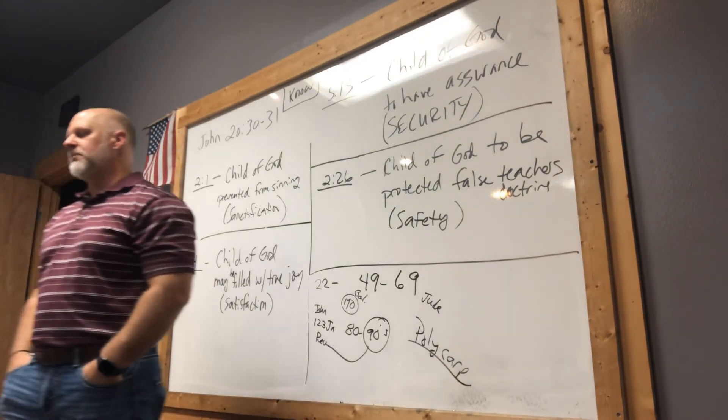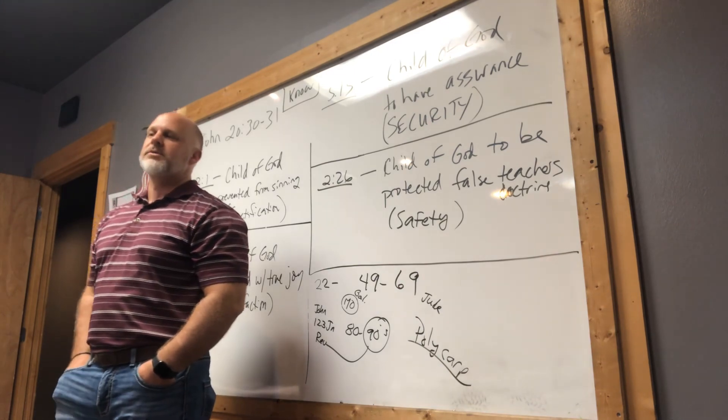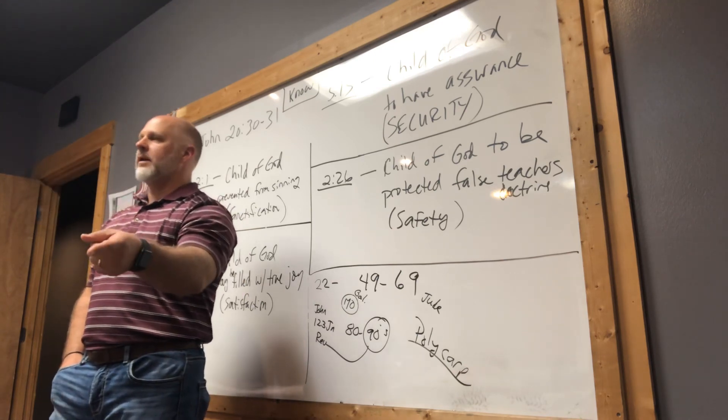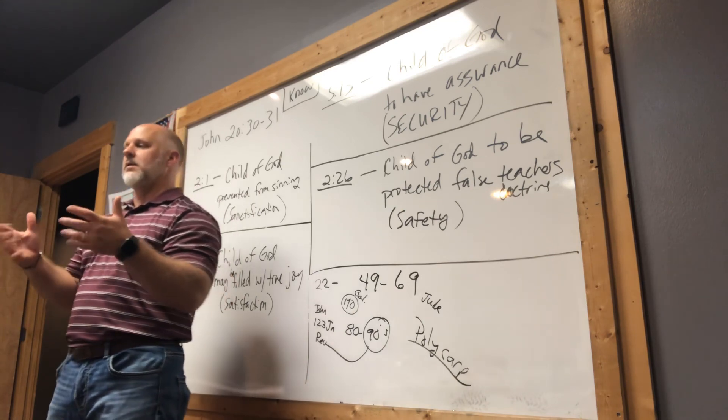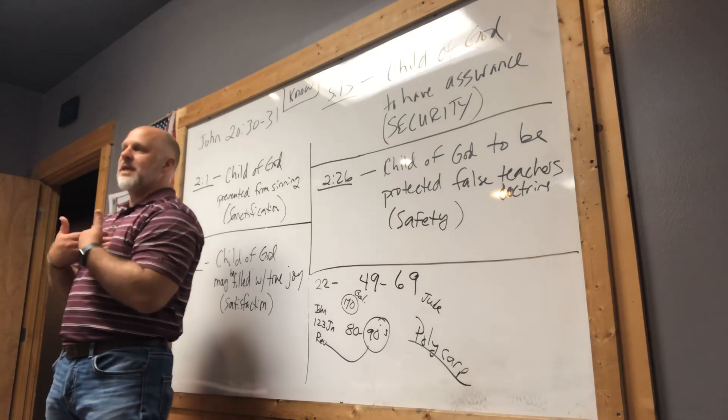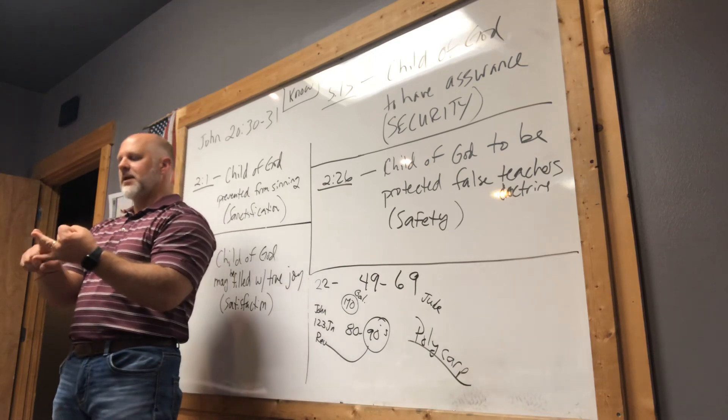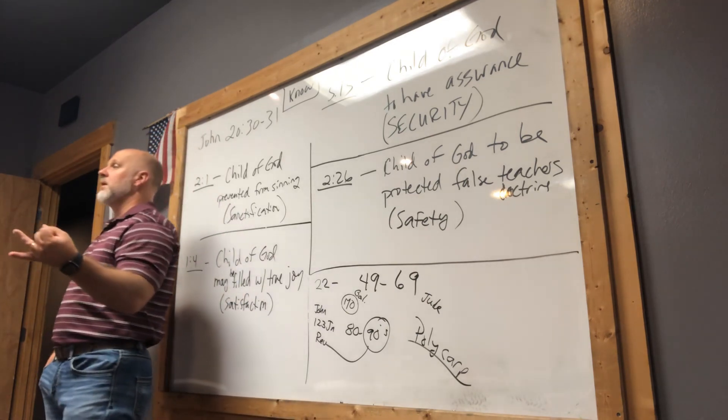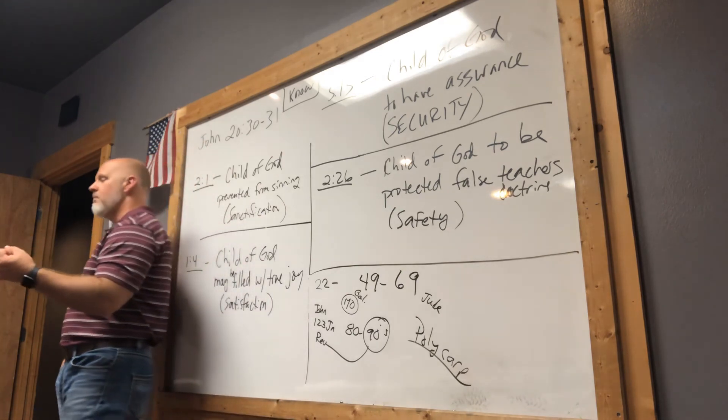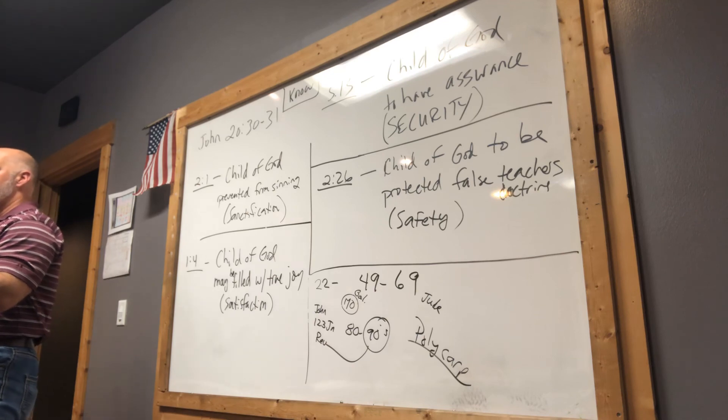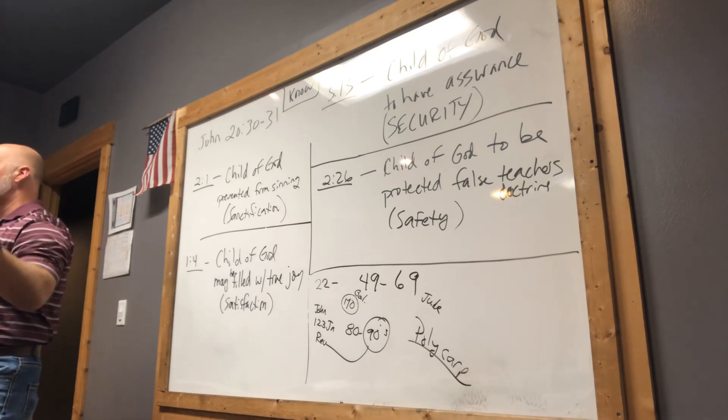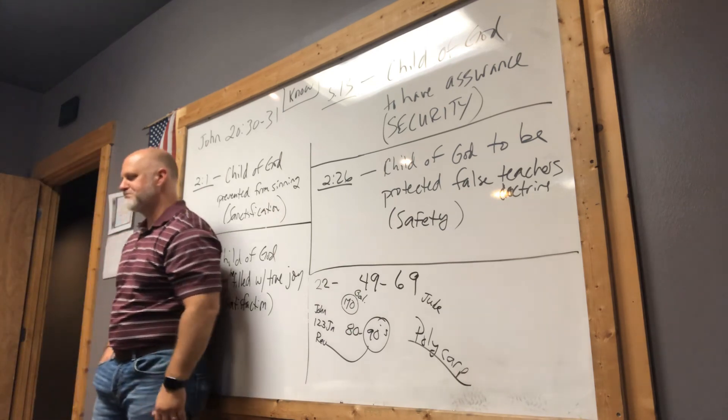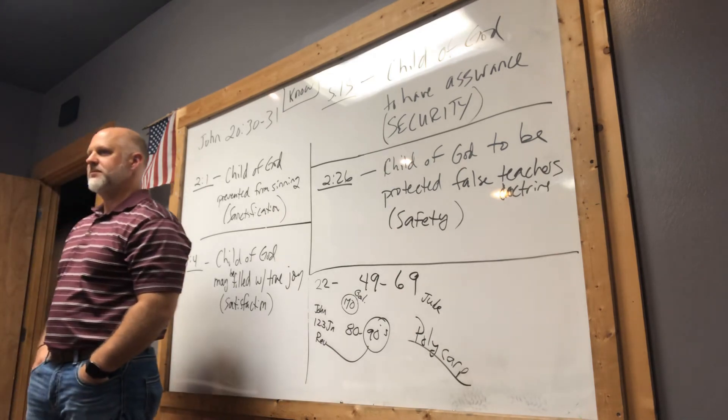When he's saying we write, who's the we? But number two, is this the, by two or three witnesses, it's established, so this is further validation? Could be. It could be, not only is this my witness, but there's the witness of others. Because he's obviously declaring an eyewitness account. And he's saying, just like he did in the Gospel of John, Jesus said, don't believe me because I say it, but believe me because the word also says it.